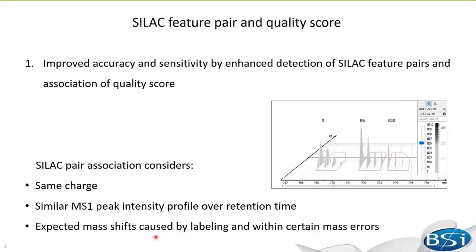I will start with some SILAC data analysis basics with PICS Q. Here we are looking at a SILAC 3-plex data. The proteins were labeled with arginine light, arginine 6, and arginine 10, and then combined.